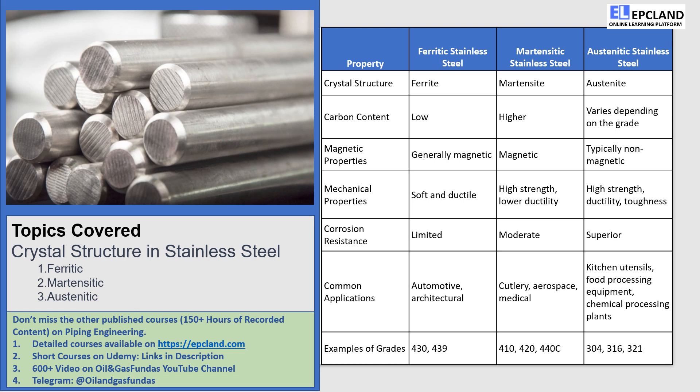Let's take a closer look at the differences between these three types of stainless steel. As you can see from this chart, ferritic stainless steel has limited corrosion resistance and is relatively soft and ductile. Martensitic stainless steel has high strength but lower ductility and fracture resistance. Austenitic stainless steel has excellent strength, ductility, and toughness, as well as superior corrosion resistance.